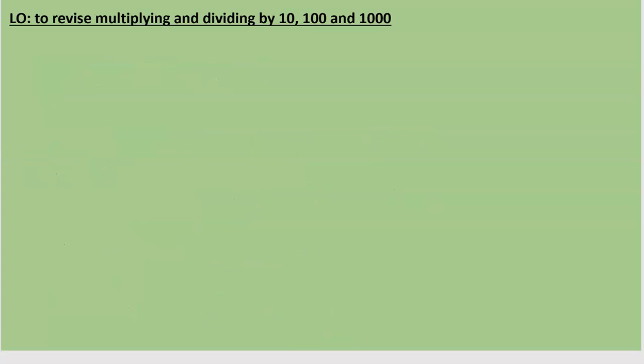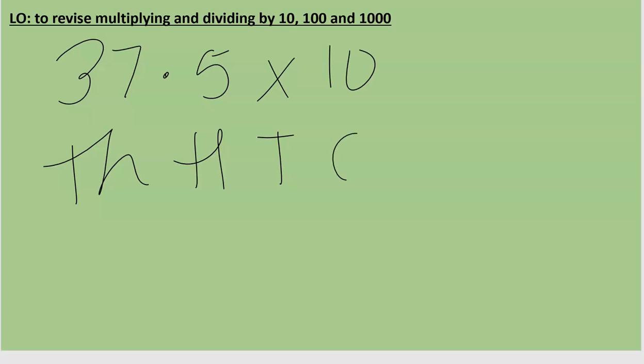Now let me show the exact same thing again, multiplying by 10, hundred, and a thousand, but for a decimal. Let's do 37.5, times 10. Again I'm going to draw out my place value grid and I'm going to add in my number, so 37.5.